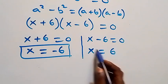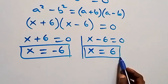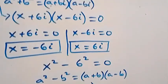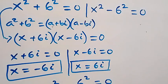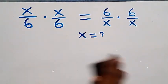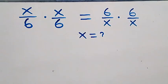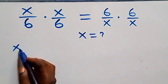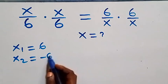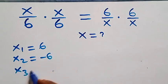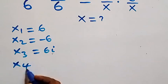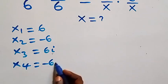Altogether we have four solutions — two real solutions and two complex solutions. x₁ equals 6, x₂ equals minus 6, x₃ equals 6i, and x₄ equals minus 6i. Now let's check whether these solutions satisfy the given problem.